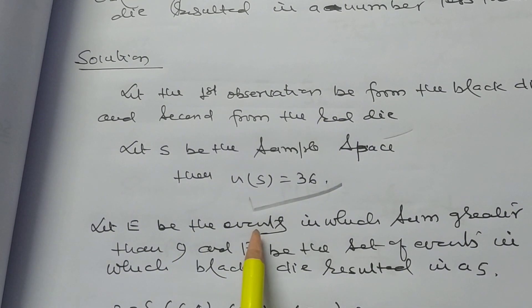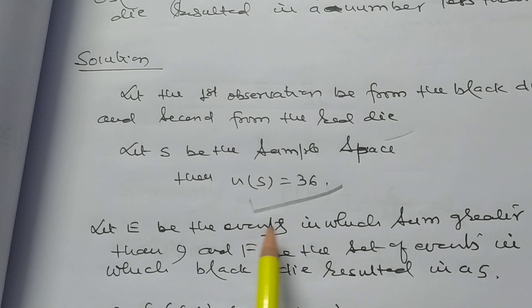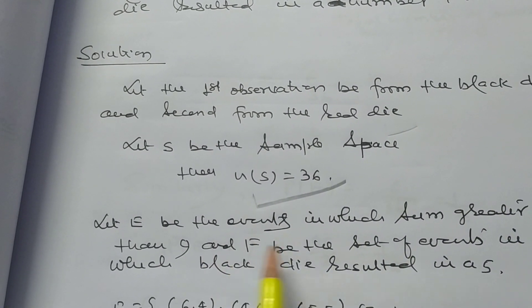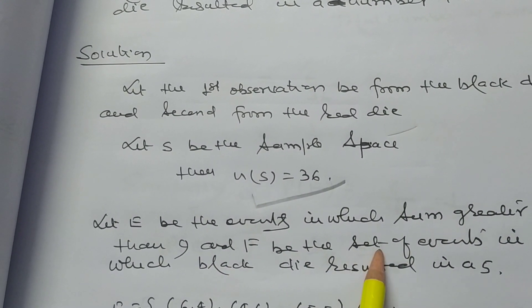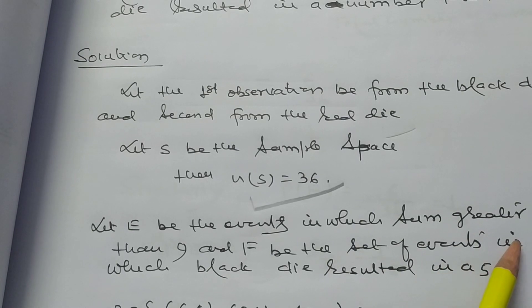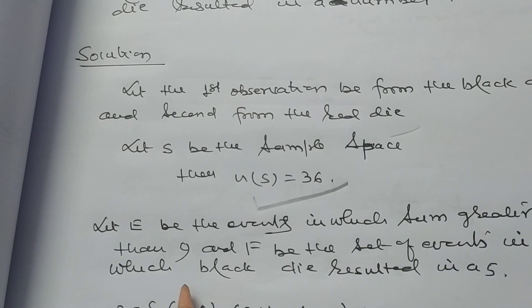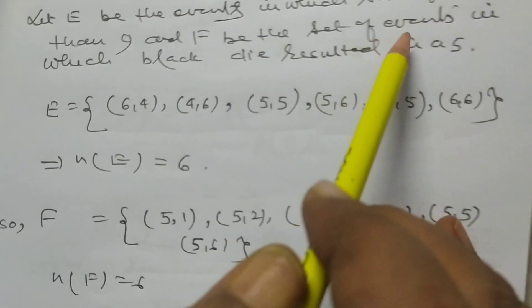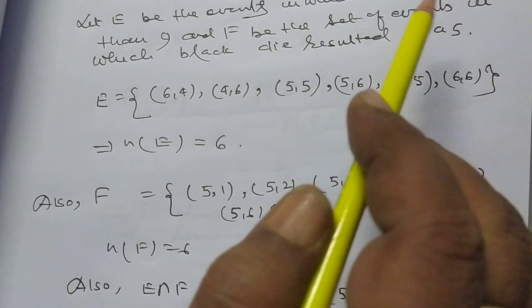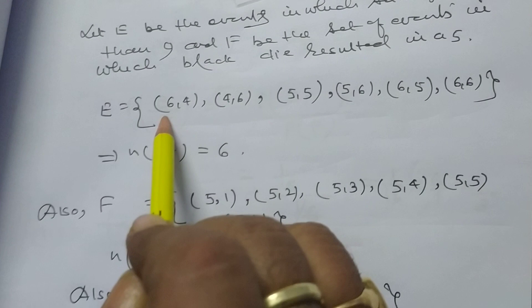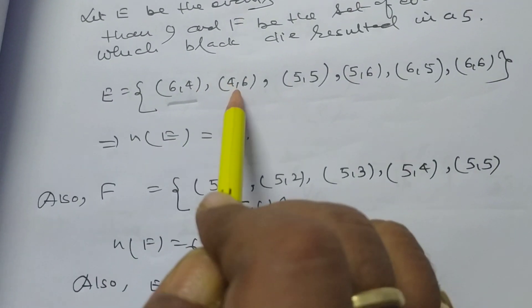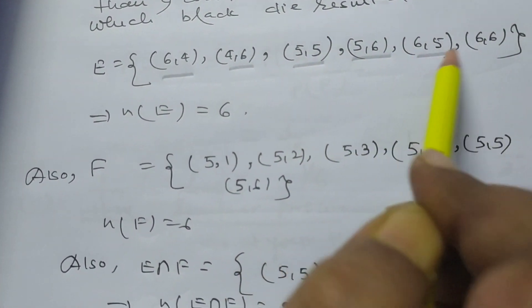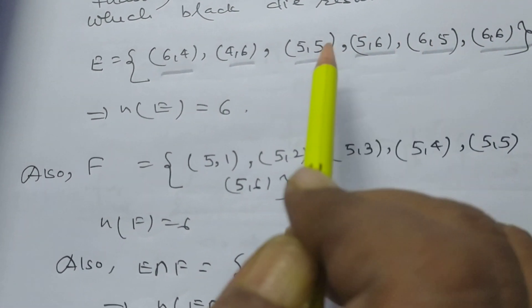Let E be the event in which the sum is greater than 9, and F be the set of events in which the black die resulted in a 5. E contains the outcomes: (6,4), (4,6), (5,5), (5,6), (6,5), (6,6).